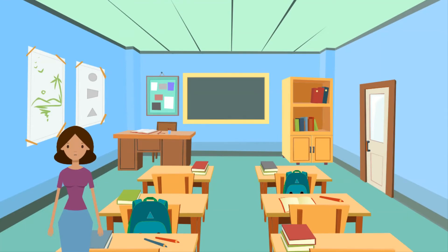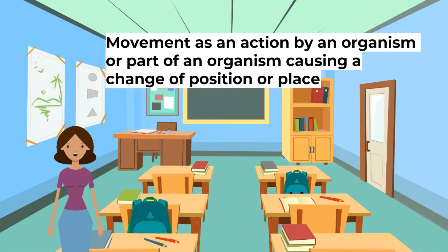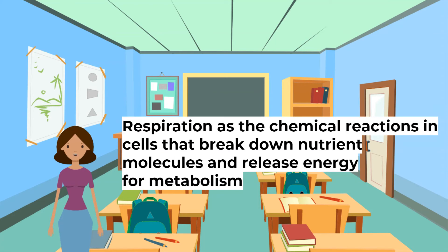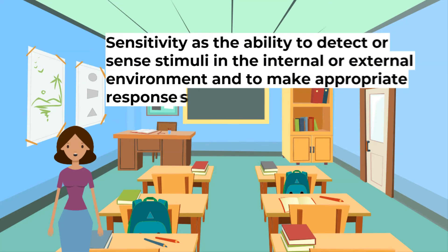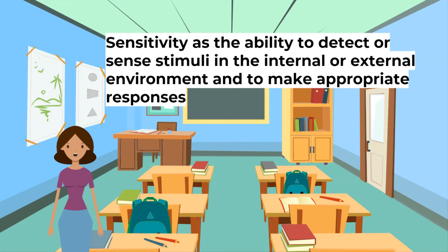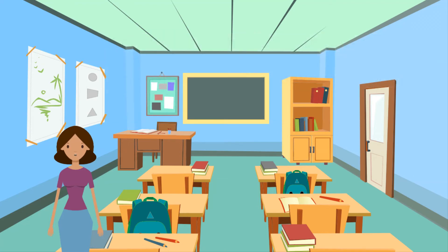Now define the terms for the supplemental syllabus. Movement is an action by an organism or part of an organism causing a change of position or place. Respiration is the chemical reactions in cells that break down nutrient molecules and release energy for metabolism. Sensitivity is the ability to detect or sense stimuli in the internal or external environment and make appropriate responses.